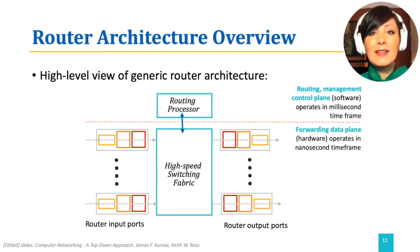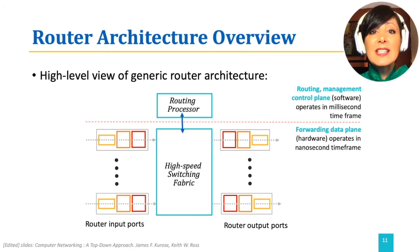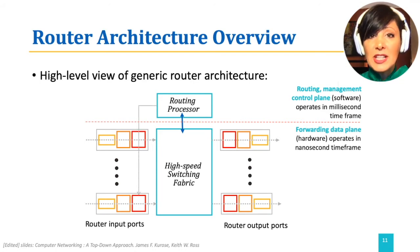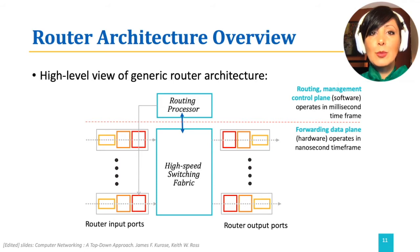Switching fabric, input ports, and output ports are the data plane elements. The switching fabric connects the input ports to the output ports. Input ports perform physical layer termination of the signal, link layer termination, and looking up in the forwarding table to find the appropriate output port. Output ports store the outgoing packet and perform link and physical layer tasks needed to transmit the packet.